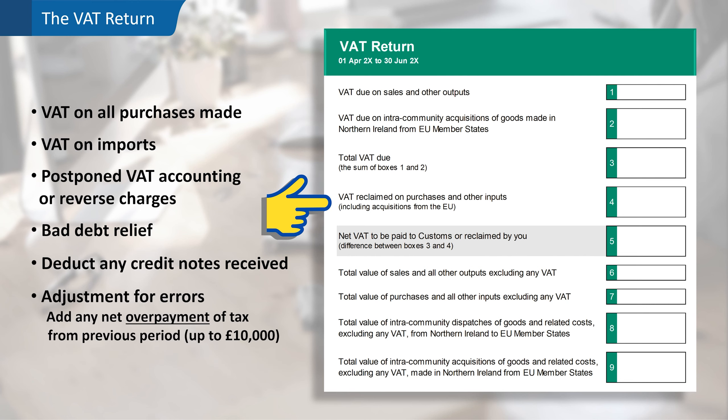Finally, box four may also need to include an adjustment for earlier period errors. If there has been a net overpayment of VAT in a previous return, then as long as the amount is under £10,000, the adjustment for the overpayment will be added to the debit side of the VAT control account and box four of the return.